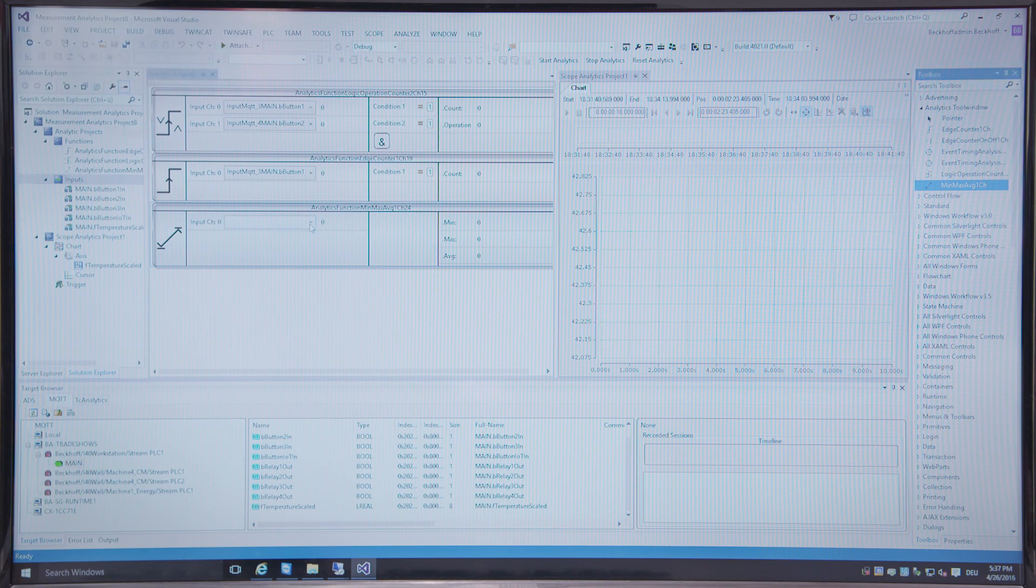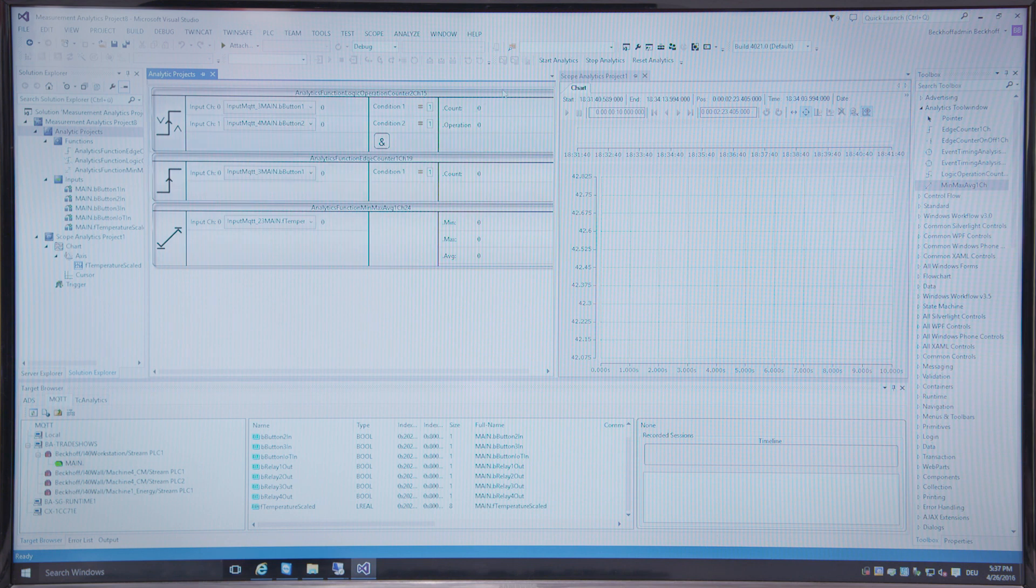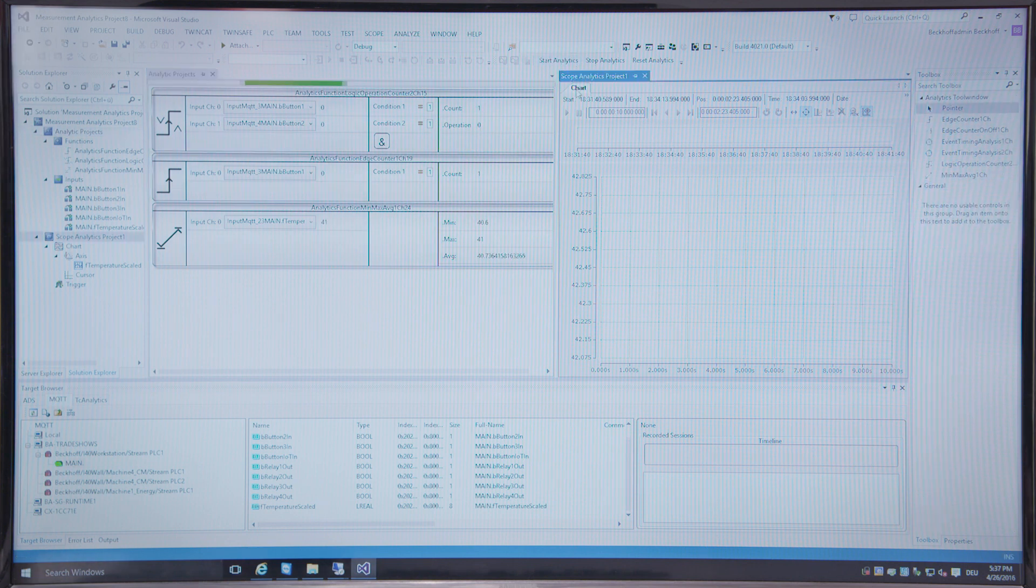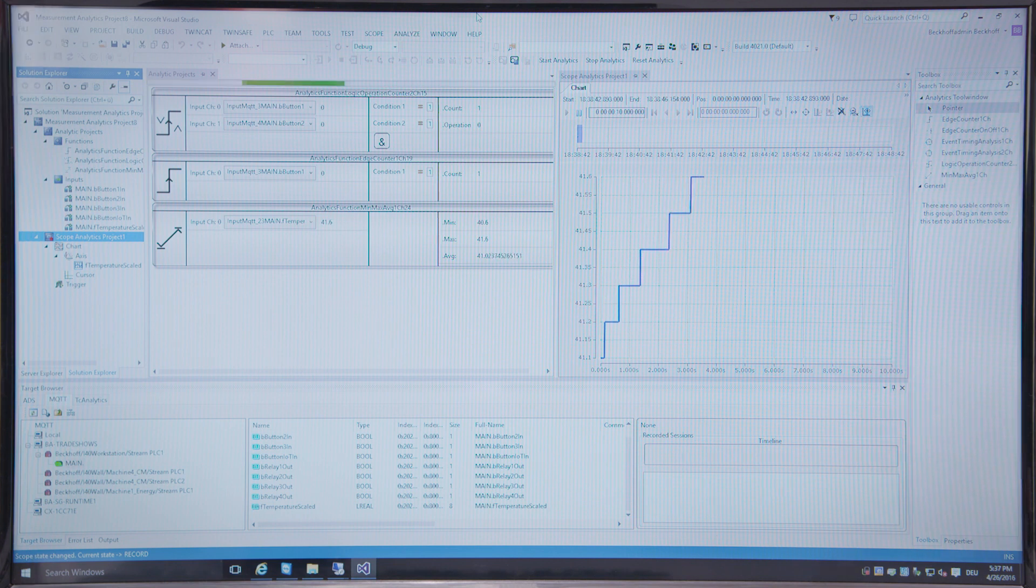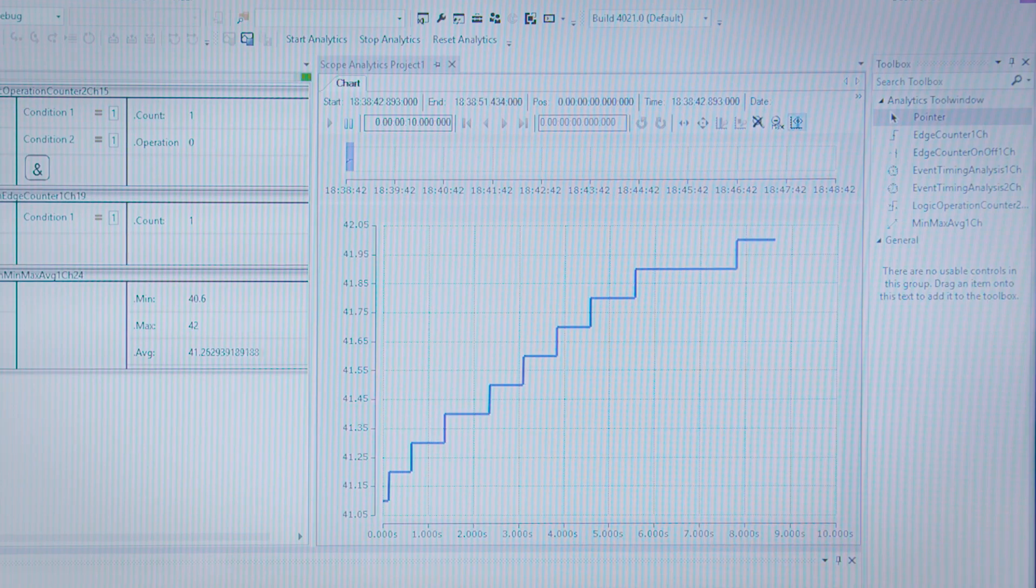If we have the data in the analytics system we can calculate different algorithms. We can choose the TwinCAT Analytics workbench. This is a configuration tool integrated in Microsoft Visual Studio or a TwinCAT PLC where we can use the TwinCAT Analytics library and so we are able to calculate things like machine cycle analysis, condition monitoring, energy monitoring, all these things can calculate in an external system out of the standard machine control.